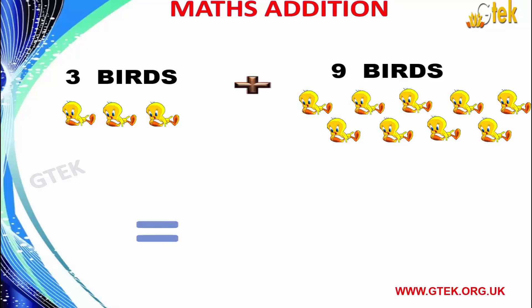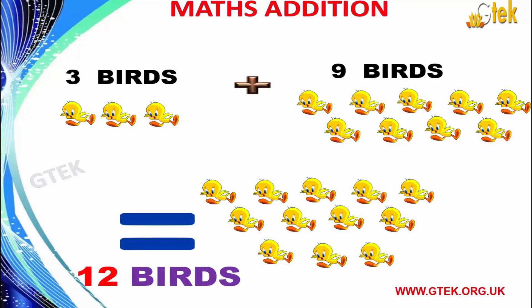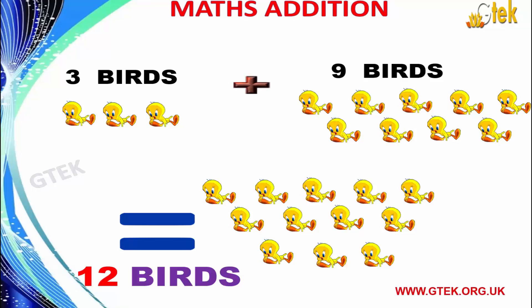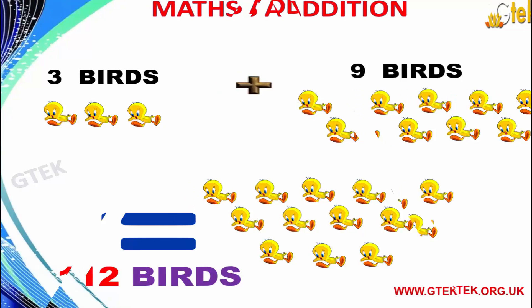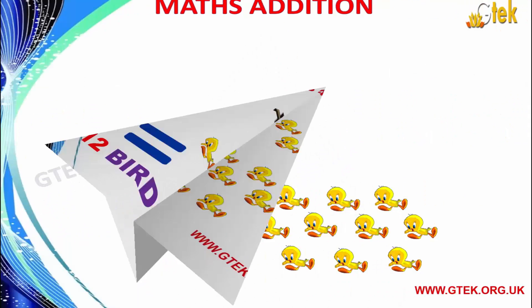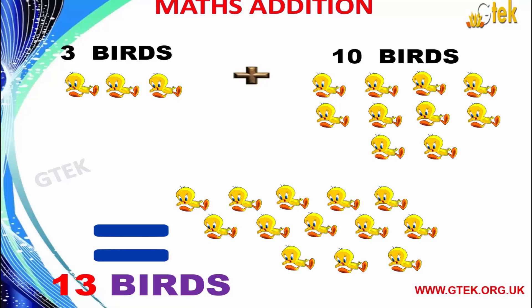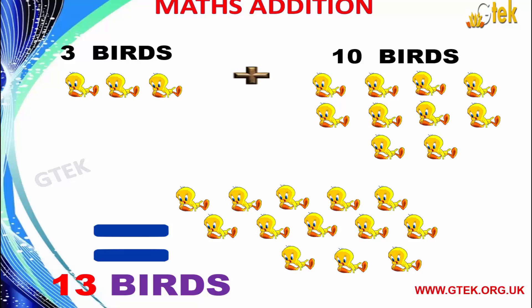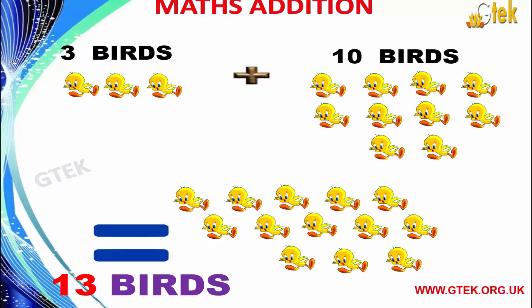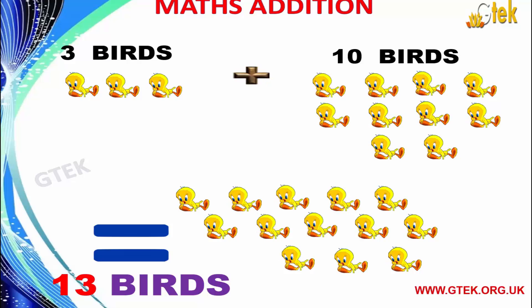3 birds plus 9 birds equals to 12 birds. 3 birds plus 10 birds equals to 13 birds.